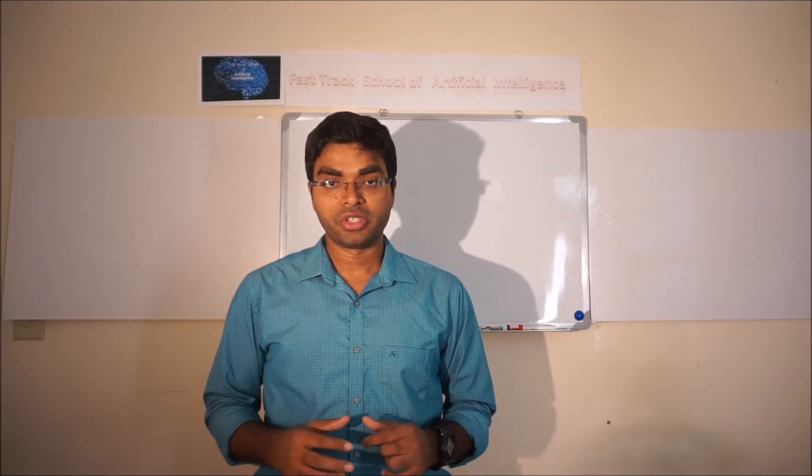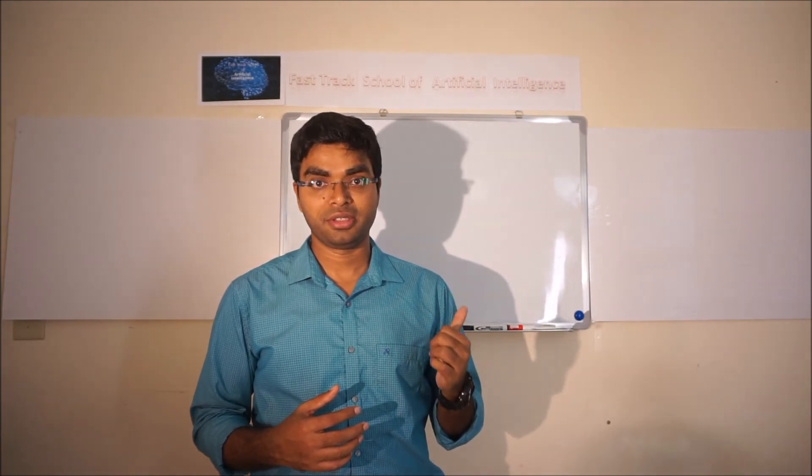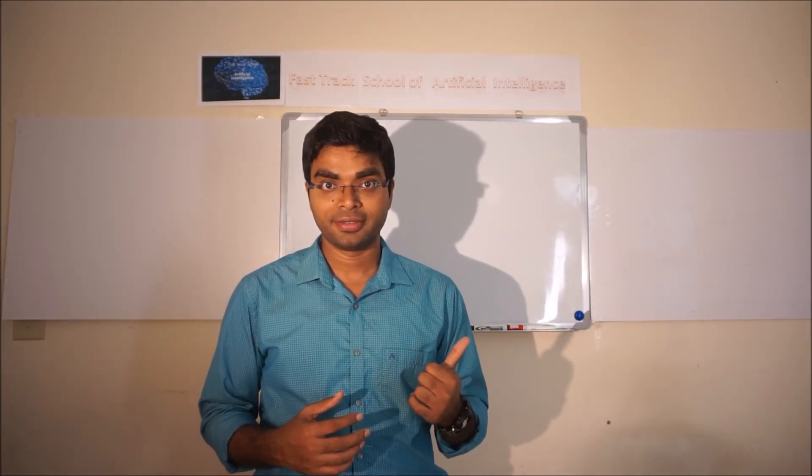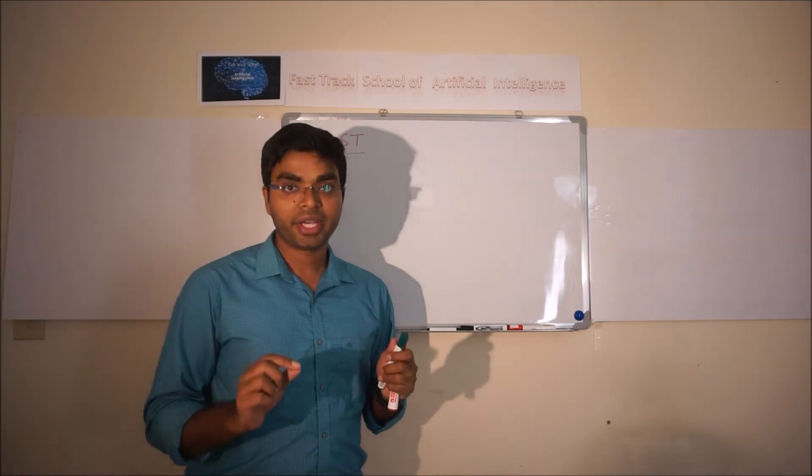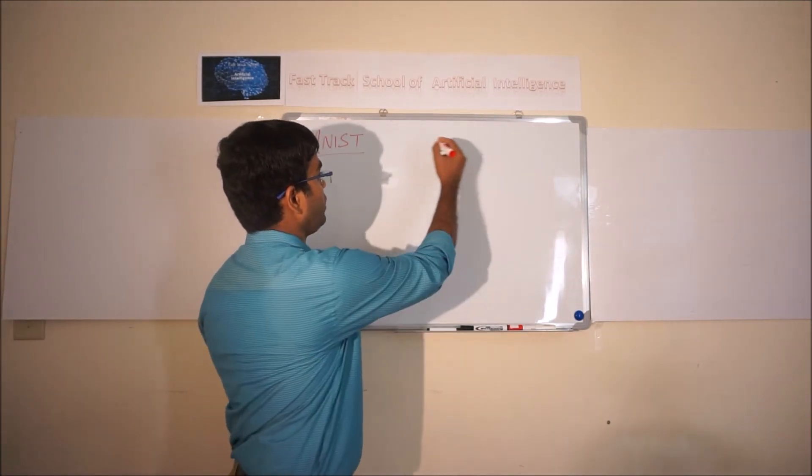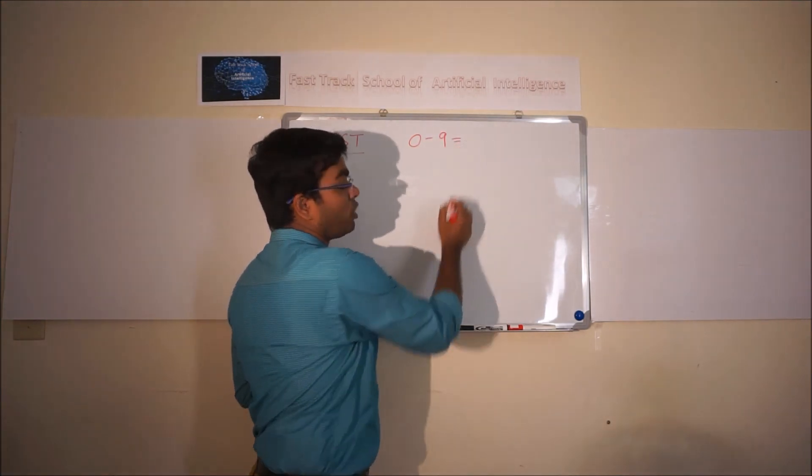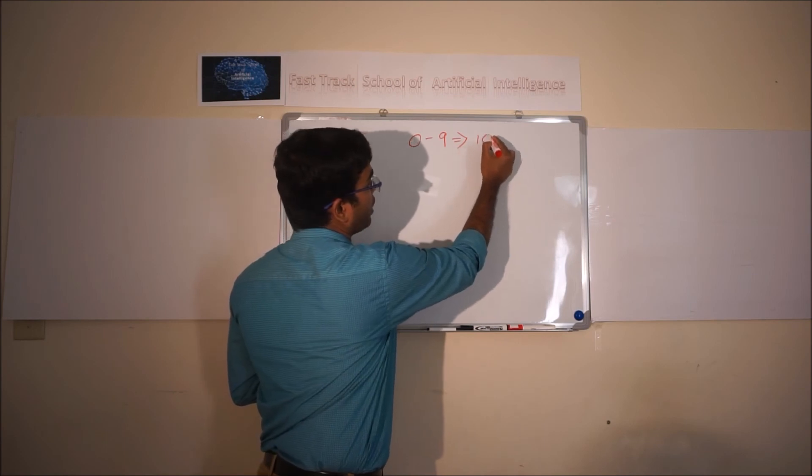Before we jump into our coding section, let's see how this MNIST digit dataset looks like. Primarily, this is handwritten digits, and the digits are between 0 to 9. So basically, we have total 10 different classes.